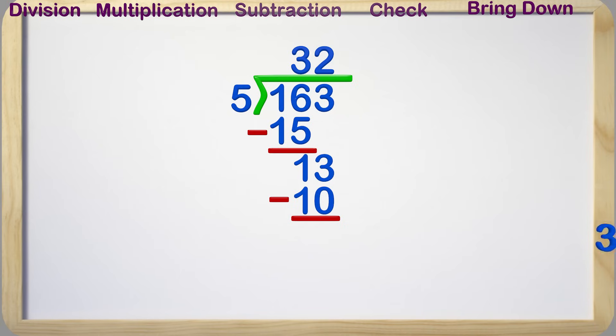Subtraction is next, and 13 subtract 10 is 3. The next step is to check. Does 5 go into 3? And the answer is no. The last step is to bring down, but there is nothing left to bring down, so we are done.